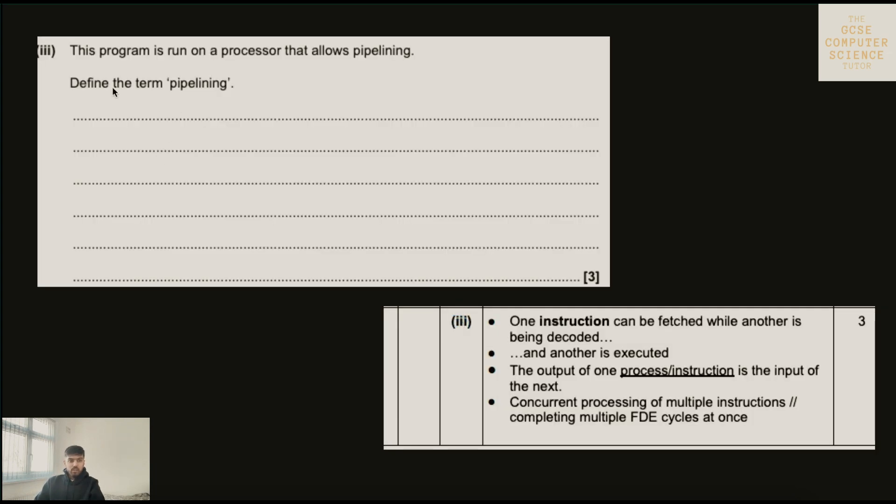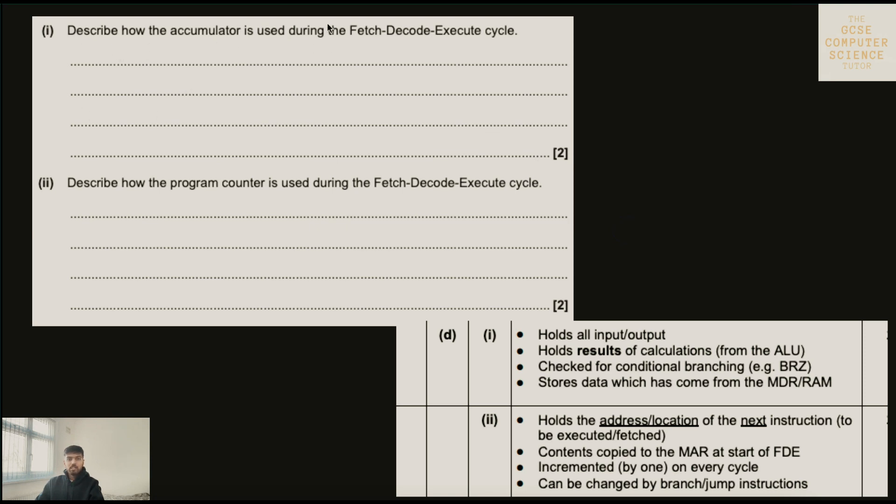Some examples of this are like 'define the term pipelining' - questions that basically just ask you to jot down the definition. This is easy marks and easy things that you can quickly learn instead of spending time on a textbook trying to figure out what definition is well suited. There's another example: describe how the accumulator is used and describe how the program counter is used. All of these are basically definitions that you can copy down into your book. Instead of just going to a textbook, you can just go to past paper exams, look at the mark scheme and copy these exam definitions down. This is one of the best exam tips anyone can give.